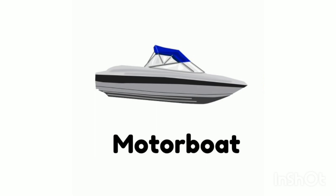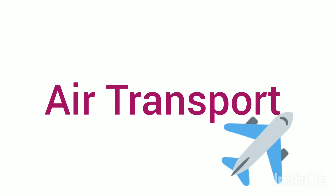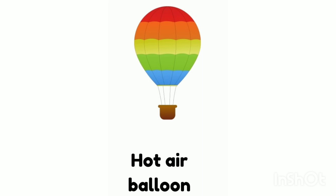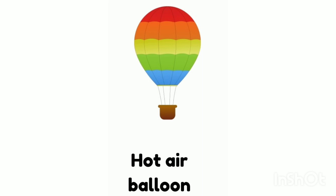Now let's learn the examples of air transport. The first air transport is hot air balloon. Say: hot air balloon. Which air transport is this? Hot air balloon. The next one is rocket — say: rocket.